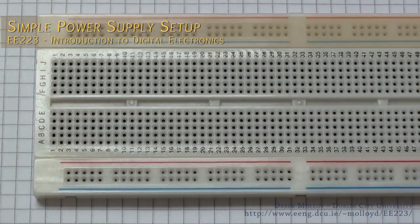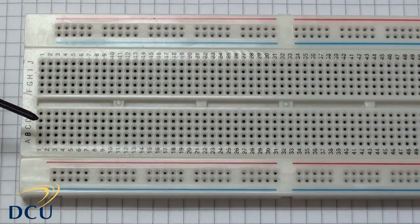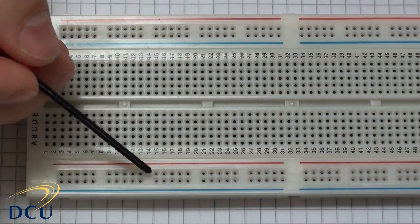The first thing we want to do before we get started is just to talk about the breadboard for a second. Here's a typical breadboard. You can see it's made up of different columns and rows.